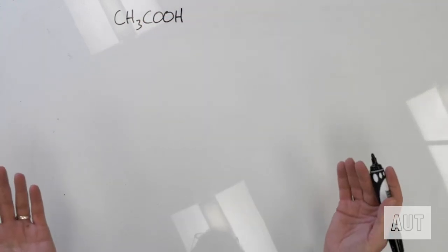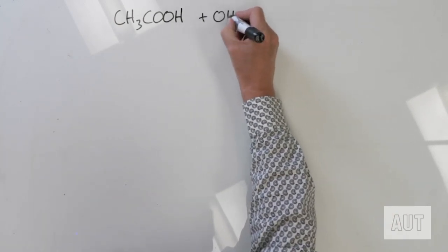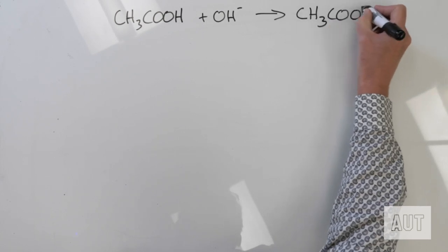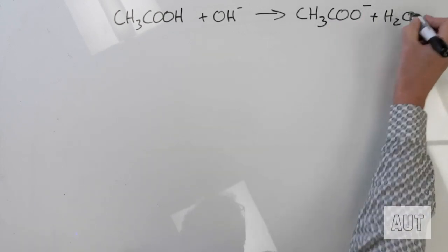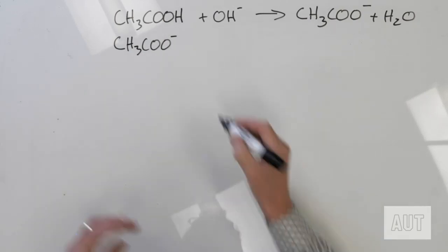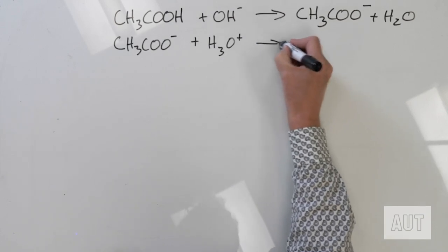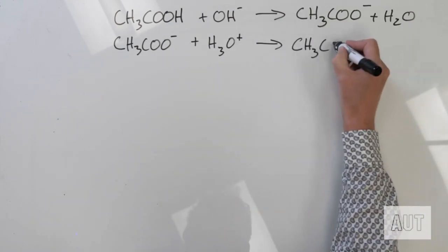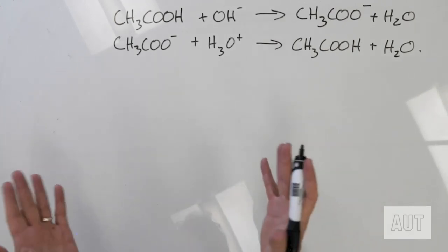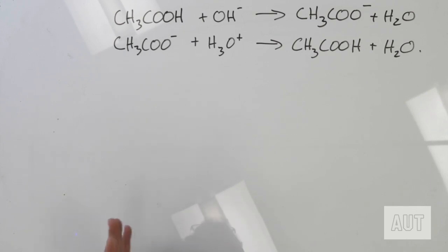If we add hydroxide ion to this buffer solution, it's going to react with the acetic acid and form the acetate ion, plus H2O. Conversely, if you've got the acetate ion in your buffer solution and you add acid — H3O+ — the added acid can react with the acetate ion and form free acetic acid, plus H2O. Those are the important reactions going on in a buffer solution, and that's why a buffer solution can resist the change in pH — it contains components that can react either with added acid or with added base.